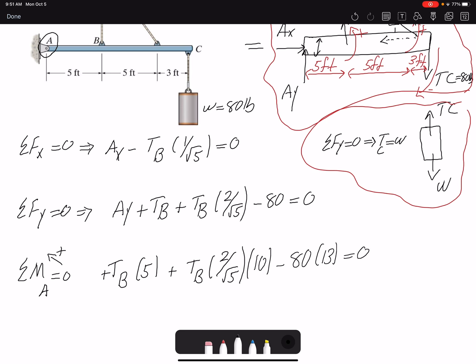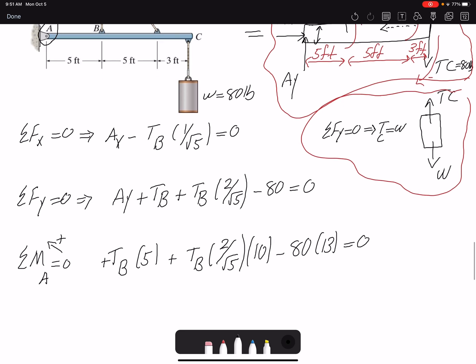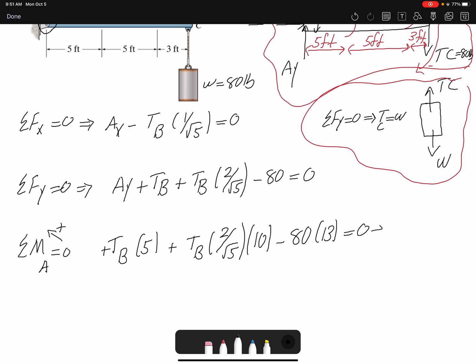So this last equation, we only have one unknown, so we can find TB. TB would be 74.58 pounds.